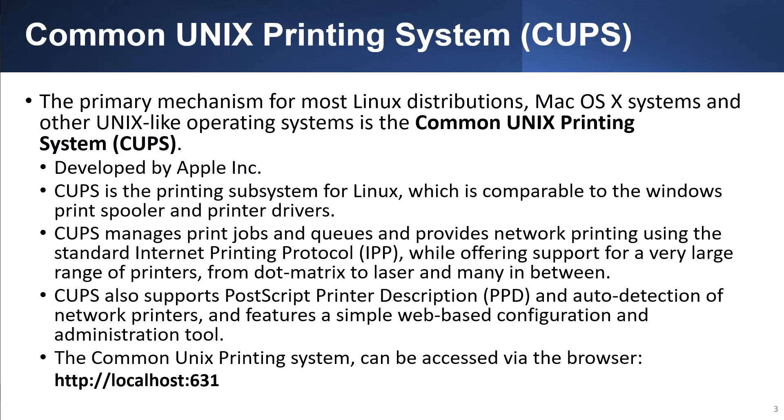The primary mechanism for most Linux distributions, Mac OS X systems, and other Unix-like operating systems is the Common Unix Printing System, or CUPS. This was developed by Apple Incorporated. CUPS is the printer subsystem for Linux, comparable to the Windows print spooler and print drivers. CUPS manages print jobs and queues and provides network printing using the Standard Internet Printer Protocol, or IPP, while offering support for a very large range of printers, from dot matrix to lasers and many in between.